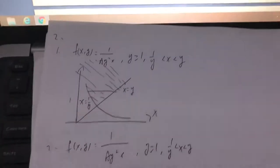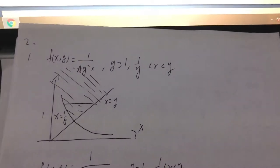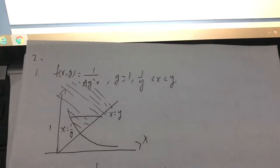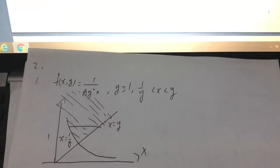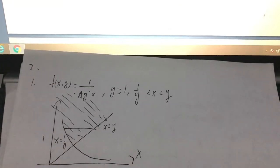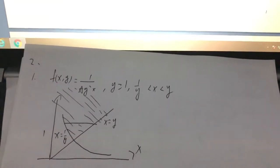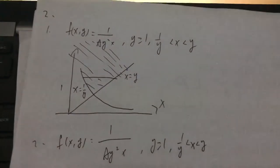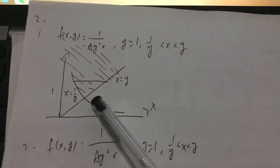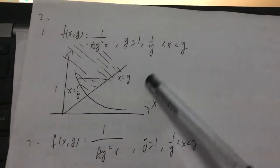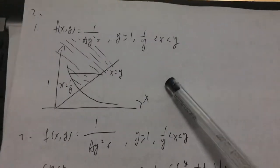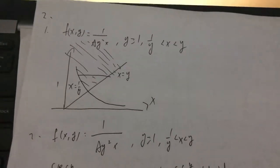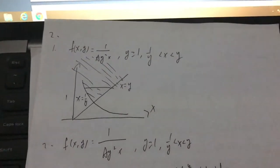So here we have f equals 1 over a y squared x, for y greater than or equal to 1, x smaller than y and bigger than 1 over y. We have a graph here. This is for x equal 1 over y, and this line is x equal y. And this range is for f equals 1 over a y squared x.